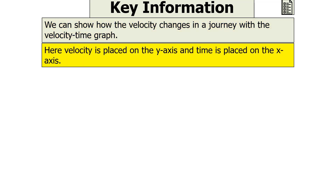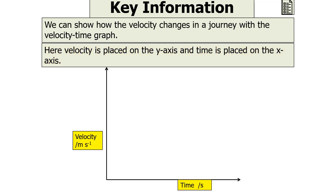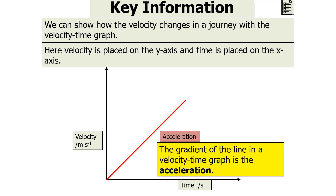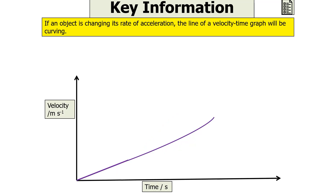We can show how velocity changes in a journey with a velocity time graph. Here, velocity is placed on the y-axis and time is placed on the x-axis as shown below. The gradient is the change in y over the change in x, which is the change in velocity over the change in time. This tells us that the gradient of a line in the velocity time graph is the acceleration of the object. If an object is changing its rate of acceleration, then the line of the velocity time graph will be curving.